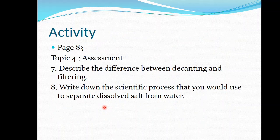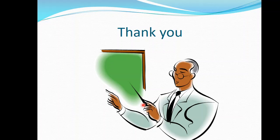That's it for today. The activity is found in our textbook on page 83, topic 4 assessment, where you only answer number 7 and number 8. Number 7 says describe the difference between decanting and filtering, and number 3 says write down the scientific process you would use to separate dissolved salts from water. Remember to stay safe, stay at home, wash your hands, avoid overcrowded places, and please wear a mask when you go out to help fight COVID-19.